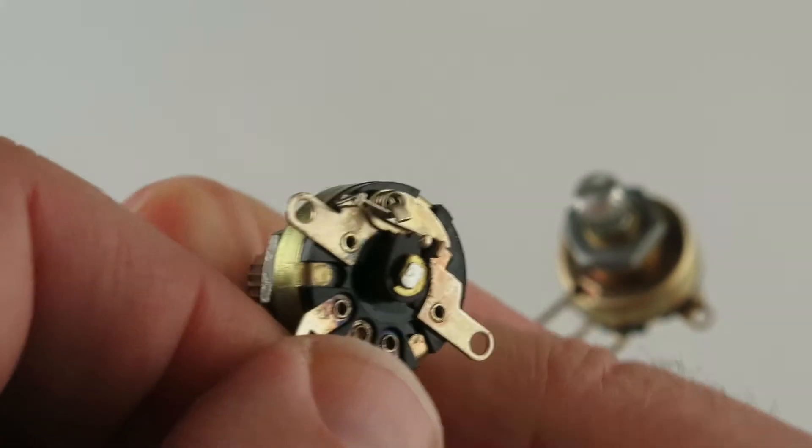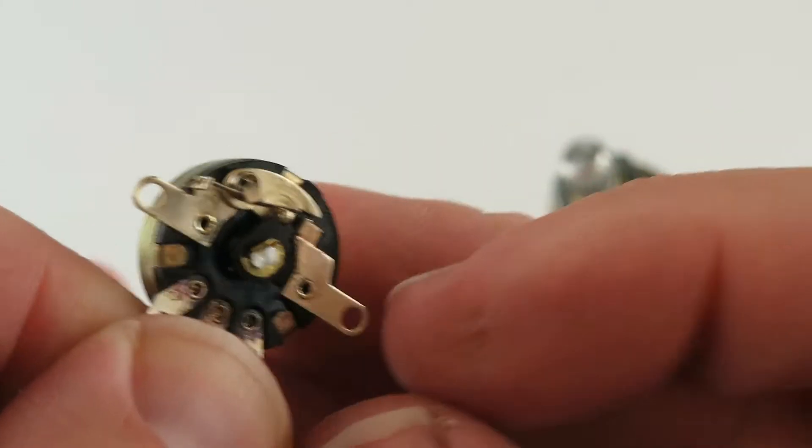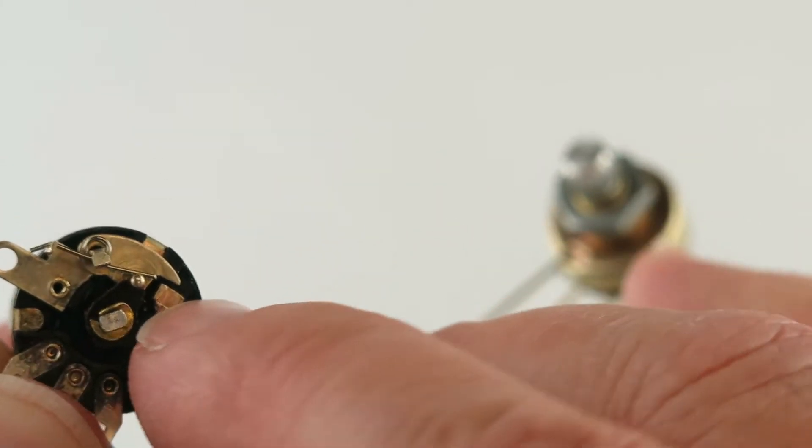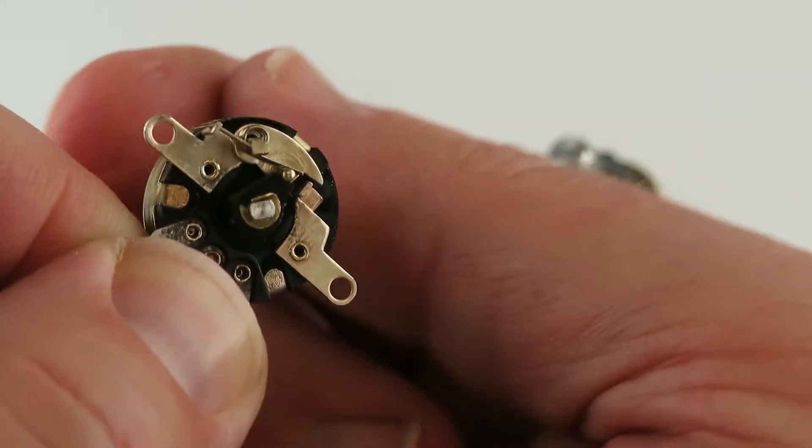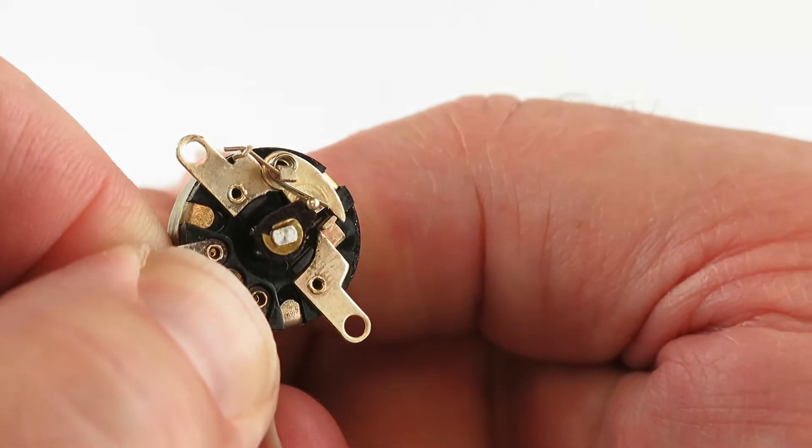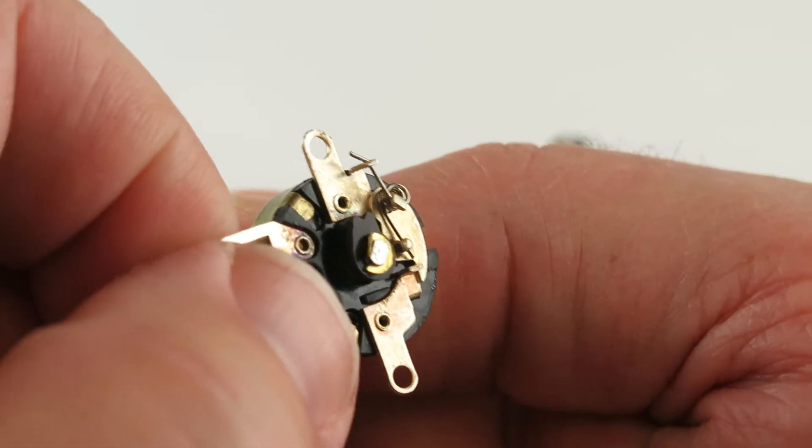As you can see that little wheel as it goes up, it turns it off. It looks like it even breaks the connection on there. So it's completely off and when you want to turn it on, now it's touching. See that little wheel?